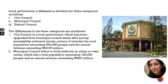Municipal Council refers to a local authority in an urban or town centre which has a population not more than 150,000 people and annual revenue exceeding 20 million. For example, in Perak, we have Majlis Perbandaran Manjung. 'Perbandaran' means municipal. For example, Petaling Jaya used to be MPPJ — Majlis Perbandaran Petaling Jaya — with a population exceeding 150,000 but not more than 500,000. So from MPPJ, they were upgraded to MBPJ, Majlis Bandaraya Petaling Jaya, due to population growth and annual revenue increases.